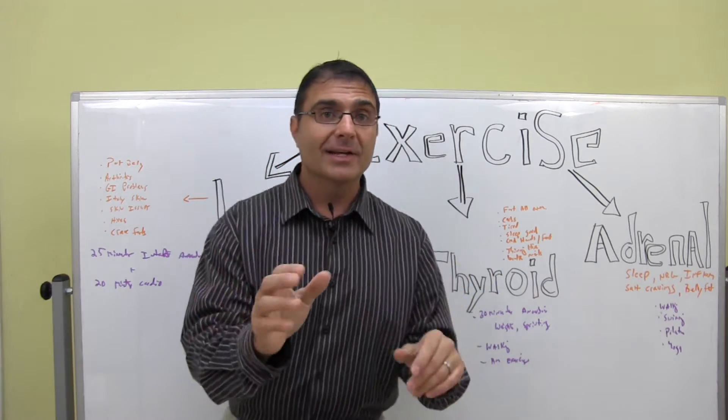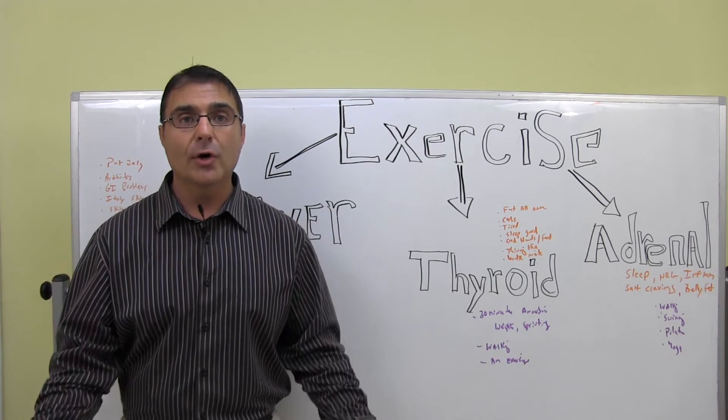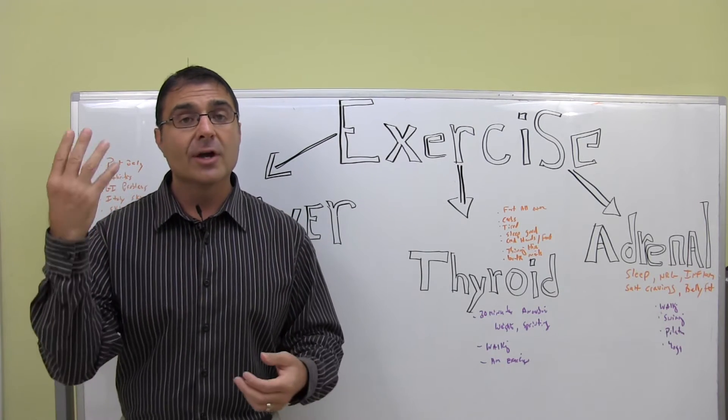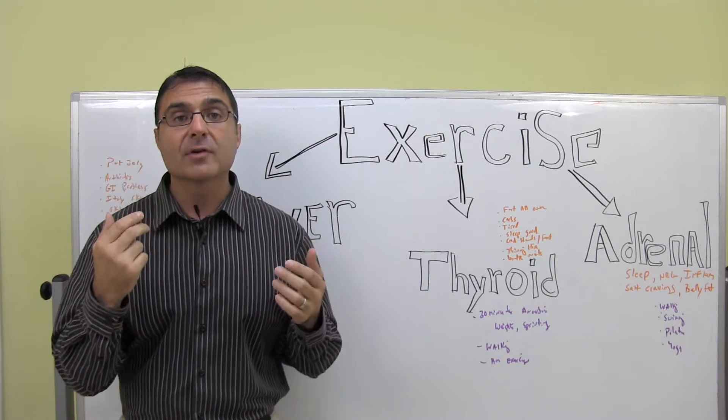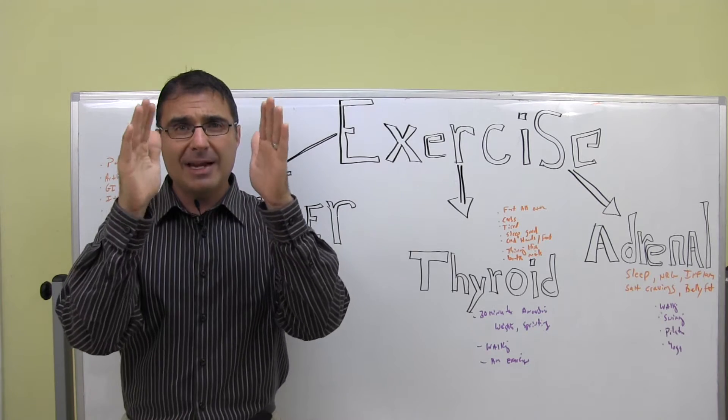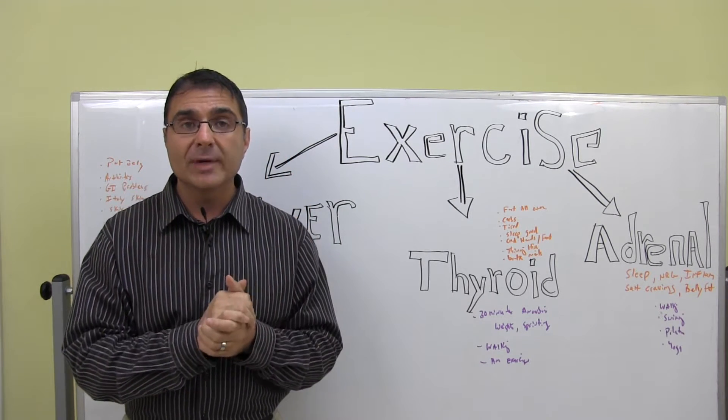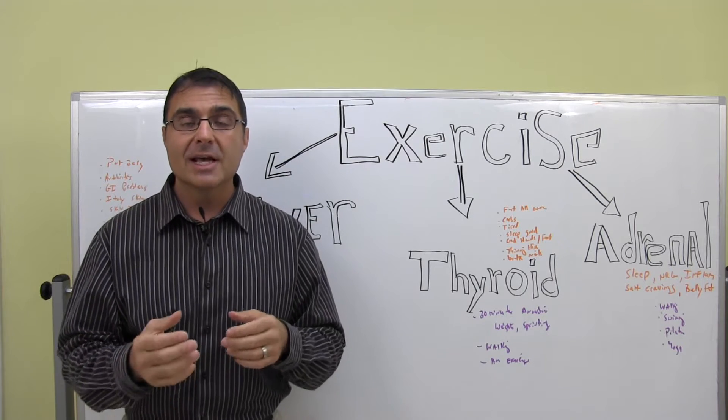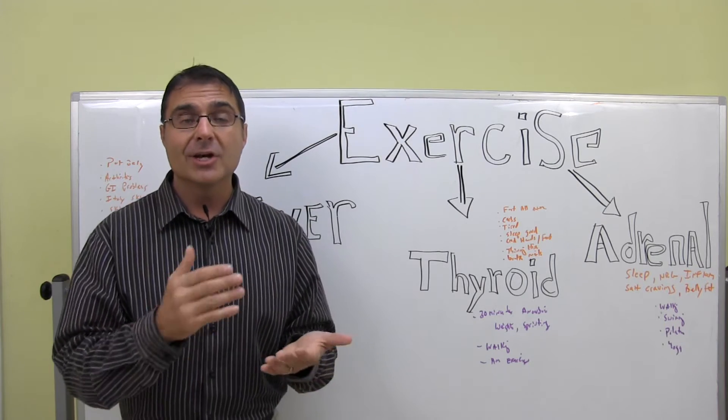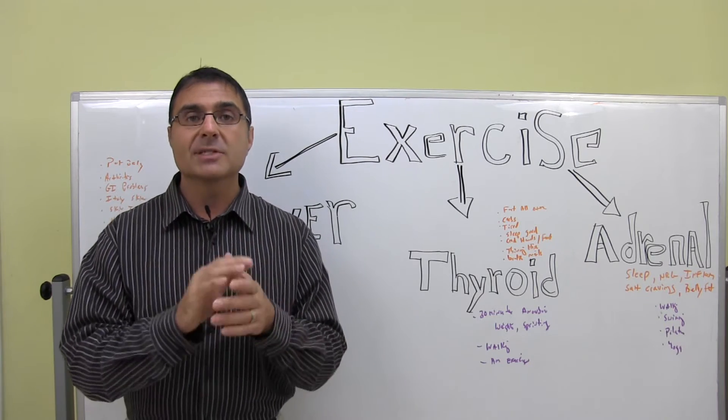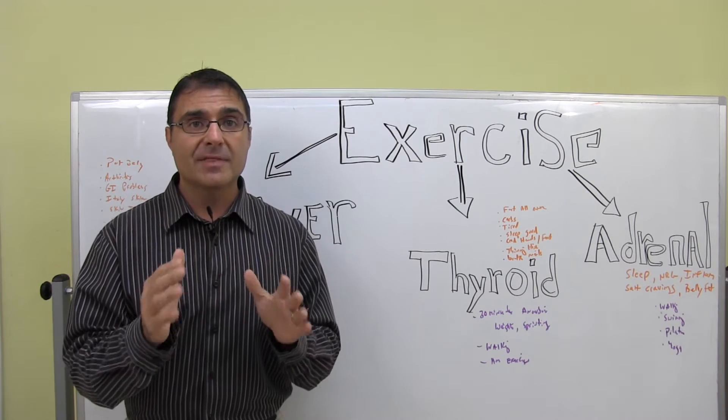Second, thyroid. If you have problems with your thyroid gland, you typically have weight all over. Your hair is thinning. You might've lost the outer one fourth of your eyebrow. Your tongue might have little indentations around it. Your nails are brittle or weak. You crave carbohydrates. There's not a clear definition between your calves and ankles. Some people call them cankles. You're tired. You have menstrual problems.